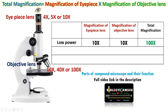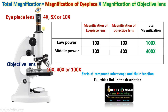First we should use low power to find and focus the image using the coarse adjustment. Then to get the finer details we use the fine adjustment. Then rotate to the middle power objective. The magnification of the eyepiece is 10x and this middle power objective is 40x, so the total magnification at middle power is 400x.